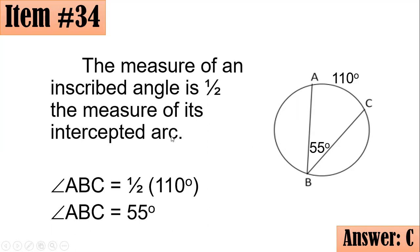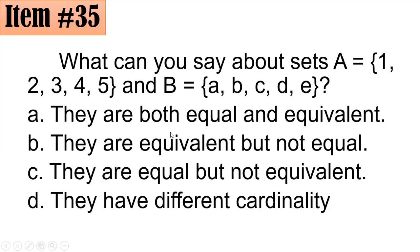Number 35. What can you say about set A, with elements 1, 2, 3, 4, 5, and set B, with elements A, B, C, D, E? Are they both equal and equivalent? Are they equivalent but not equal? Are they equal but not equivalent? Or do they have different cardinality?